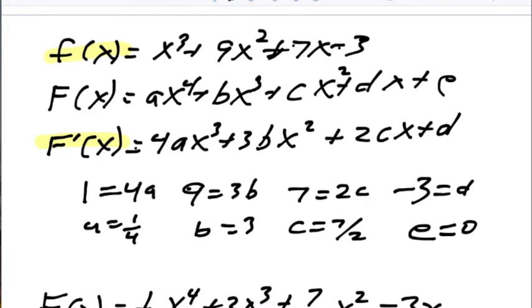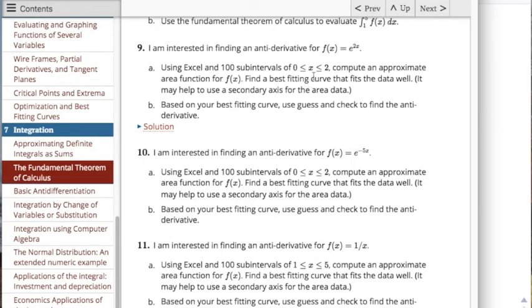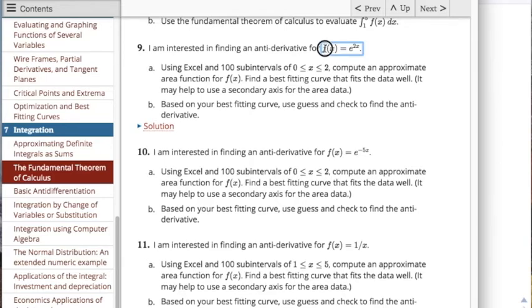I can do the same technique on the next problem, problem 9, where little f of x is e to the 2x. For the next problem, problem 9, I'm going to look at f of x equals e to the 2x.